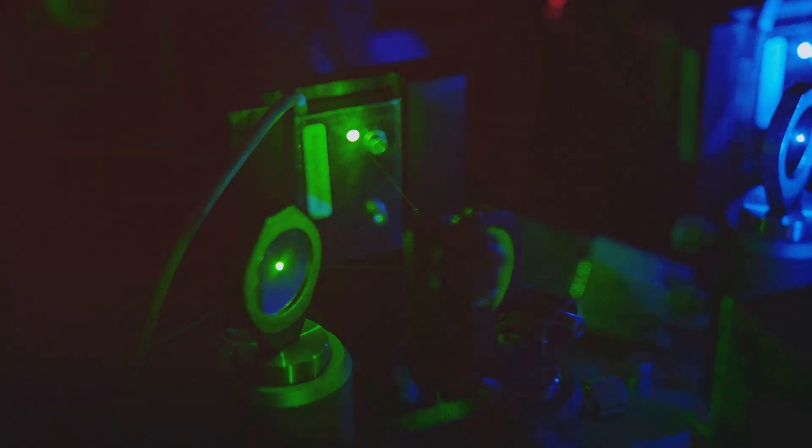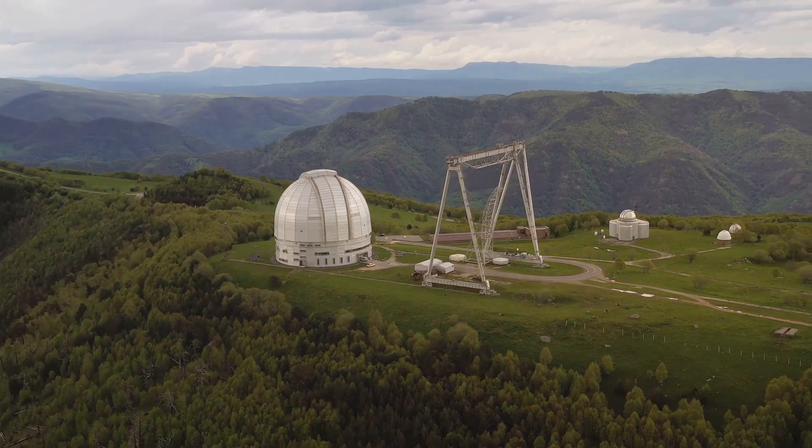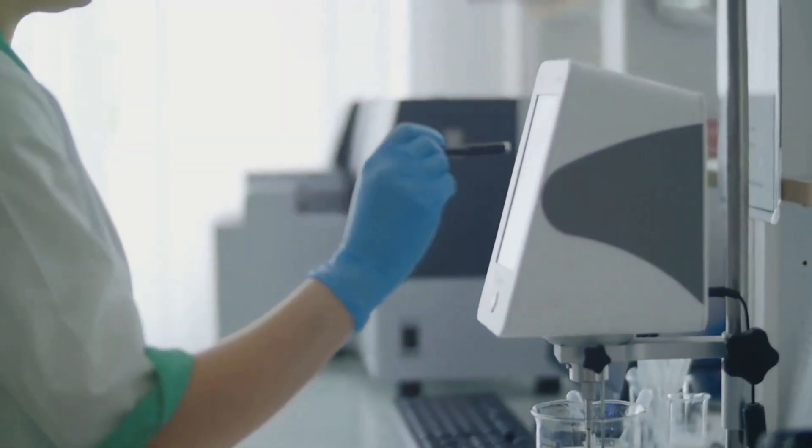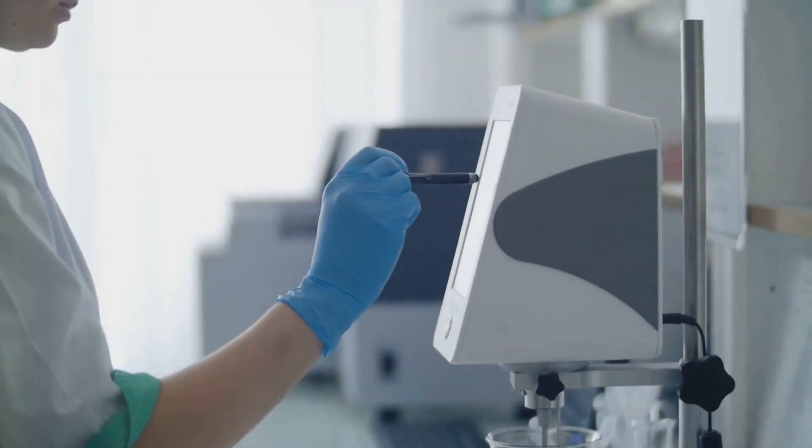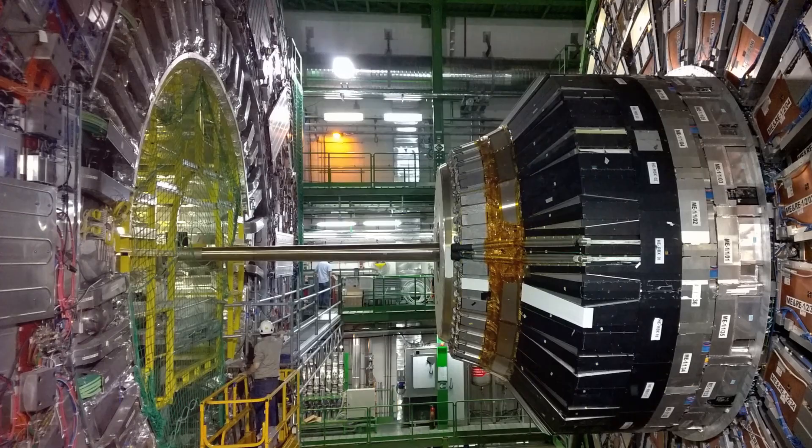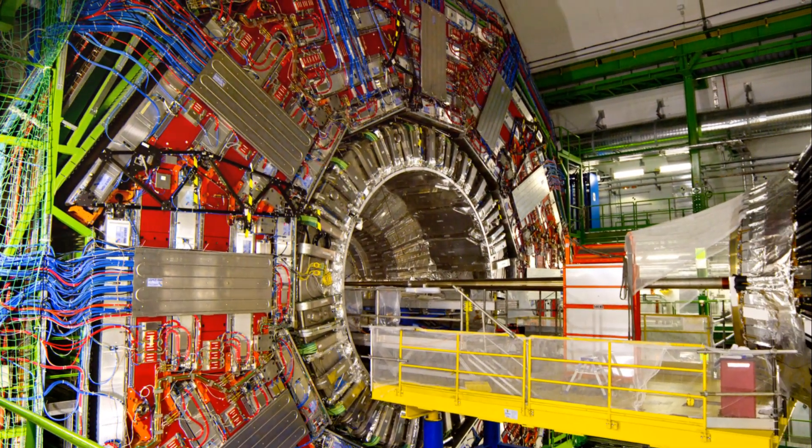There are several methods used to search for dark matter. One method is called direct detection. This involves building sensitive detectors deep underground. Another approach is indirect detection. This involves searching for the annihilation products of dark matter particles. Finally, scientists are trying to create dark matter particles in the lab using particle accelerators like the Large Hadron Collider.